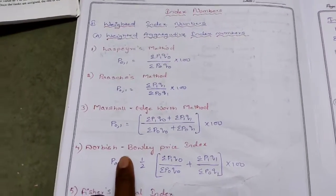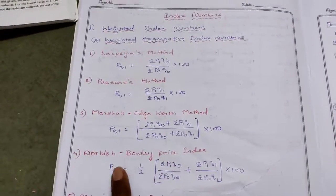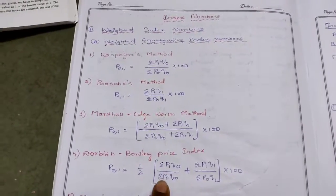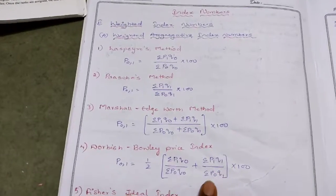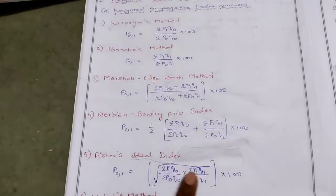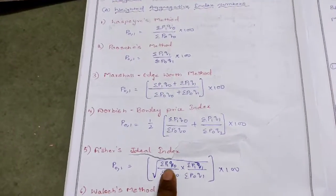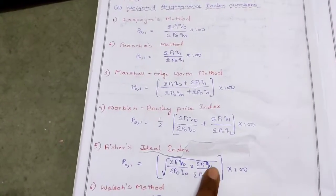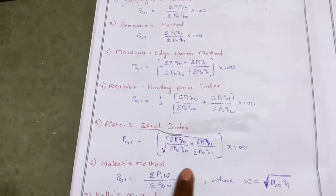Next, Dorbish-Bowley price index formula: half of (ΣP1Q0 / ΣP0Q0) + (ΣP1Q1 / ΣP0Q1), into 100. Fisher's Ideal Index: P01 = √[(ΣP1Q0 / ΣP0Q0) × (ΣP1Q1 / ΣP0Q1)] × 100. Note that 100 should be outside the root.